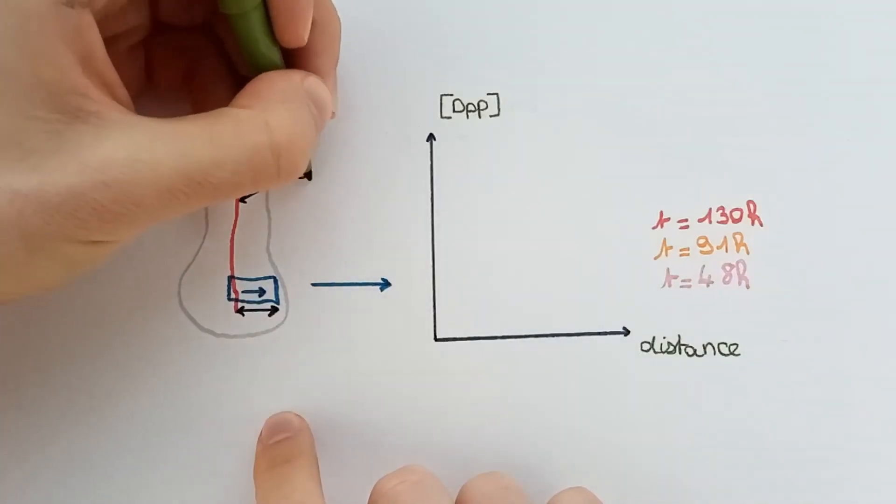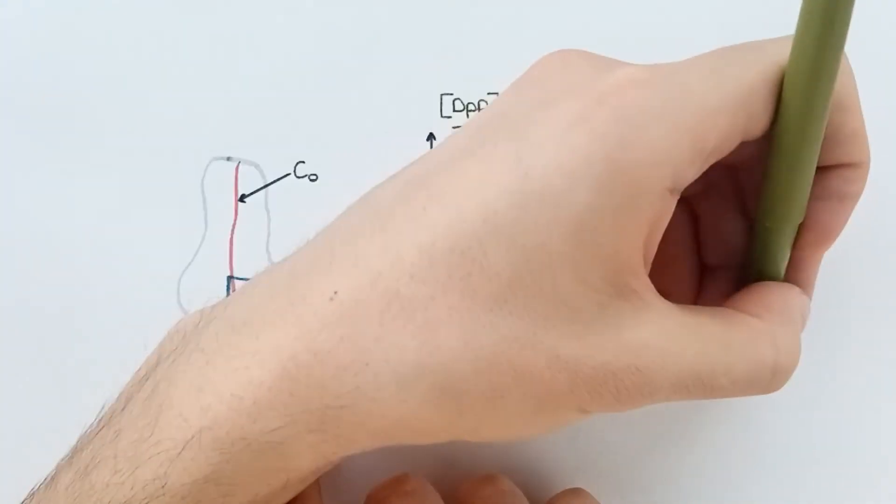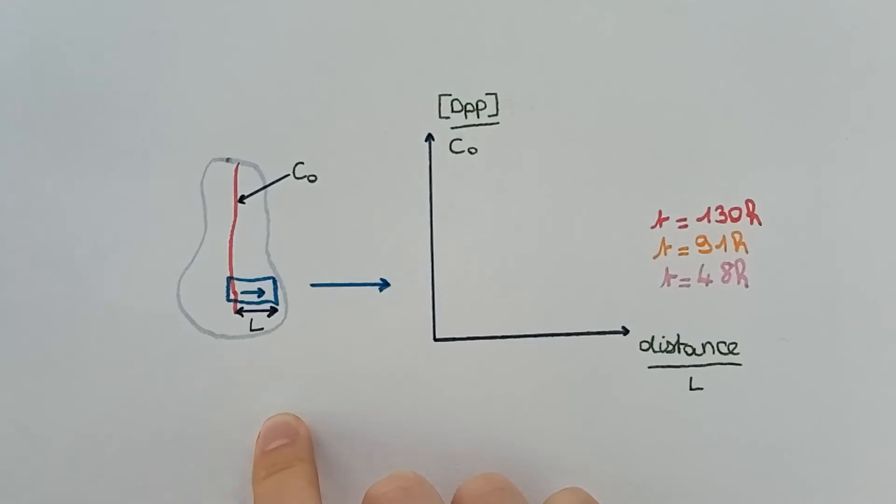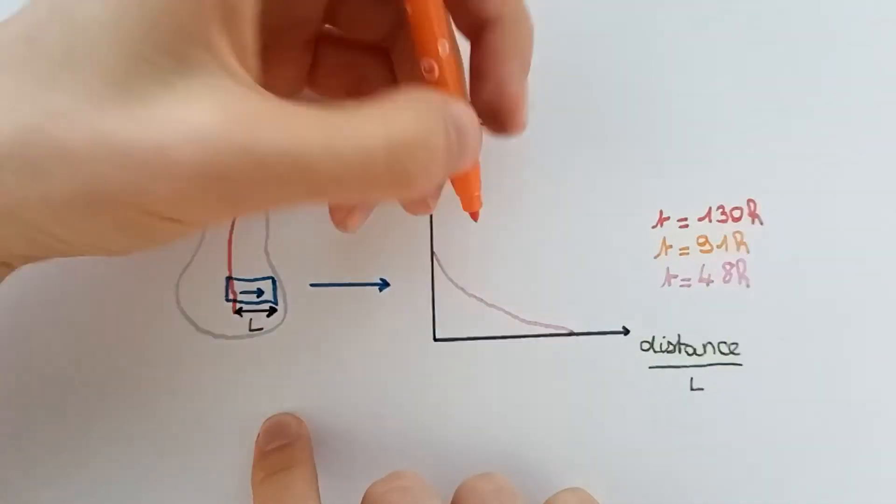Now, if we compare DPP concentration in the tissue to the concentration in the production area, and that we use the relative distance to the source as a scale, we see that the gradient is constant.